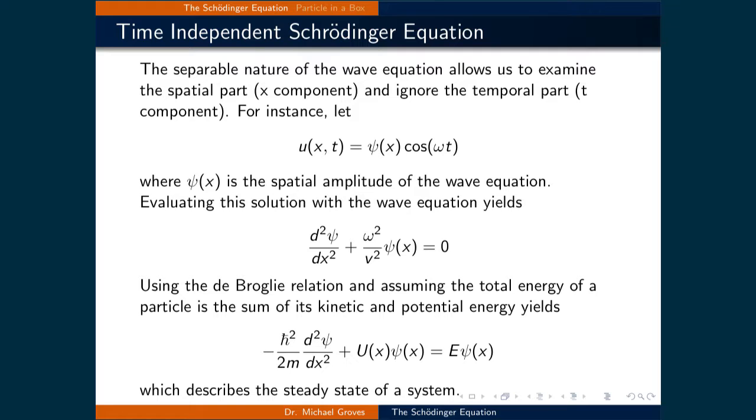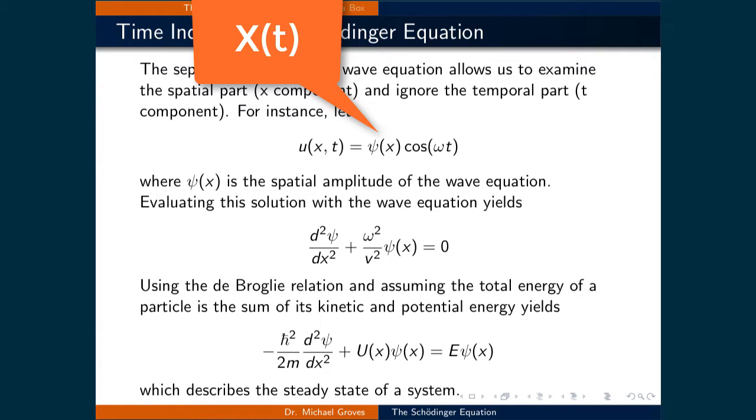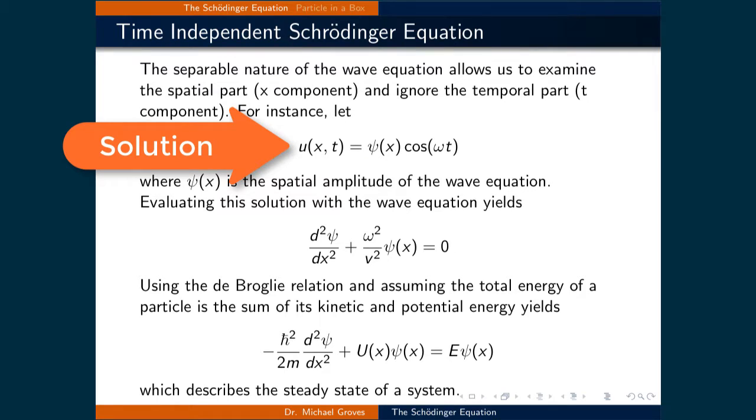At this point, however, we don't know what X(x) is, but instead of writing it as a capital X, let's just write it as ψ(x). Therefore, the solution to the wave equation u(x,t) = ψ(x)cos(ωt).